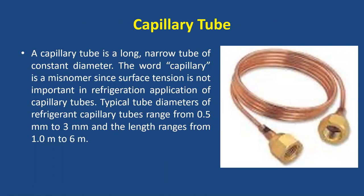A capillary tube is a long, narrow tube of constant diameter, generally used for small systems like refrigerators or small-capacity window air conditioners of 1 TR or less. Its use is complicated for larger capacities due to mass flow restrictions. A major advantage is that pressure equalization occurs before the compressor starts, allowing the use of a low starting torque electric motor.